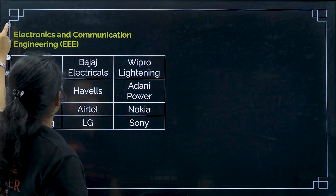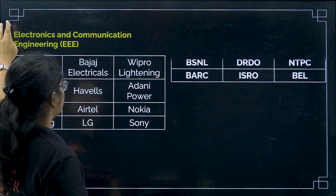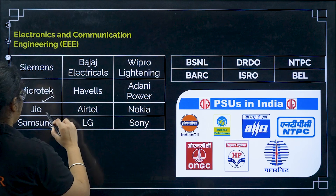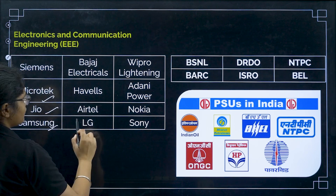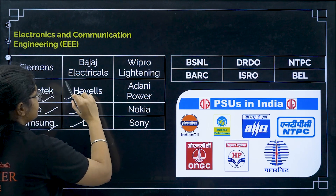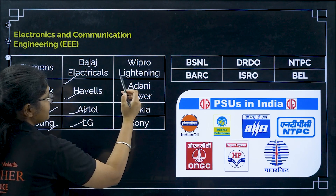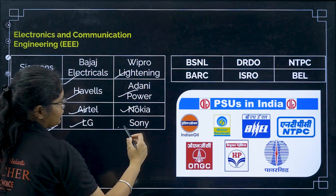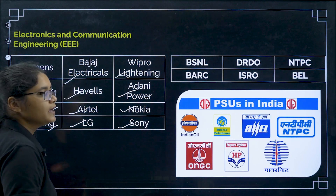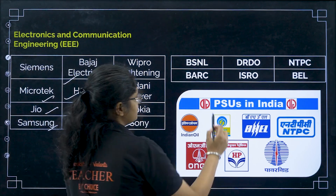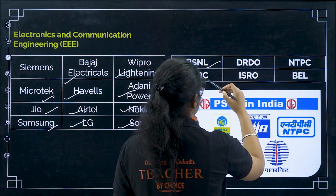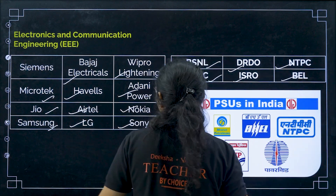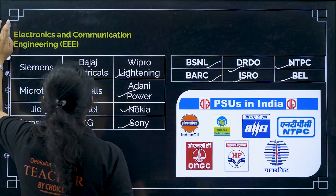The top recruiters for ECE are Siemens, MediaTek, Jio, Samsung, Airtel, LG, Havells, Bajaj Electricals, Wipro, Adani Power, Nokia, and Sony. For government PSU options through GATE, ECE candidates have the same options: BSNL, BARC, DRDO, ISRO, NTPC, and BEL.